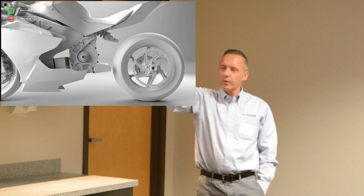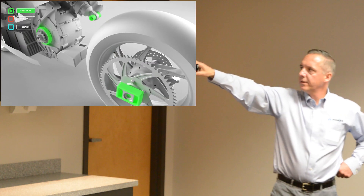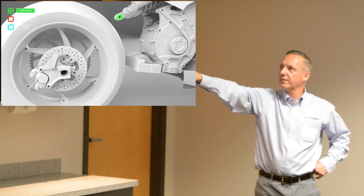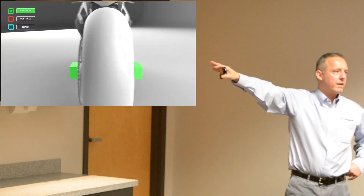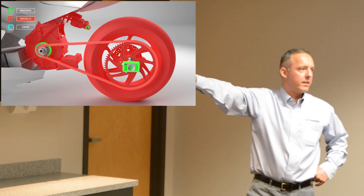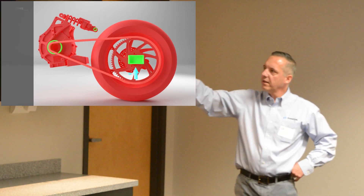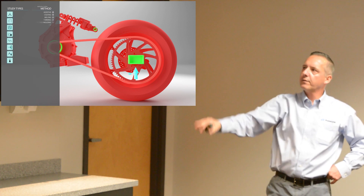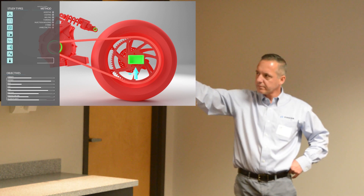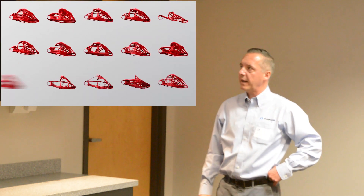Autodesk was creating a swing arm for a motorcycle. The green areas represent the constraints — where it's going to be fixed to the bike. The red areas are the obstacles, meaning don't put anything in that space. Then you start to apply loads to the product, and the computer will spit out different geometries that could fit the bill for what was specified.